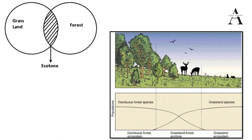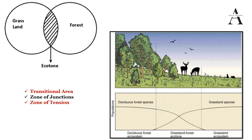Other examples of ecotone include: grassland between desert and forest, where both deciduous forest species and grassland species are present; the Himalayas between the Indian and Tibetan ecosystems; estuaries between saltwater and freshwater — rivers have freshwater and oceans have saltwater, and estuaries have a mix of both; and marshy lands between dry and wet ecosystems. Ecotones can be narrow, like between grassland and forest, or wide, like between forest and desert.